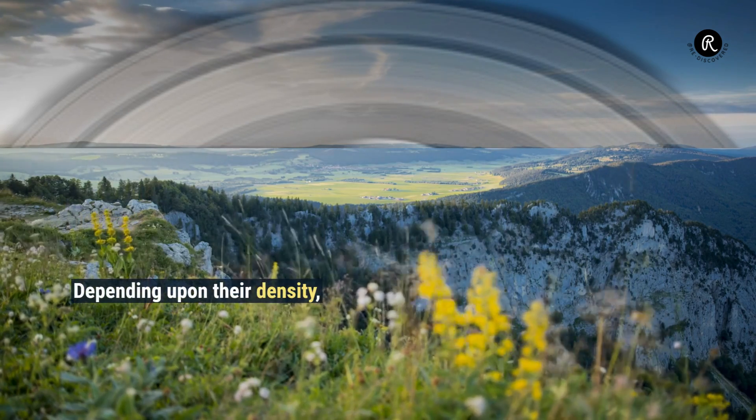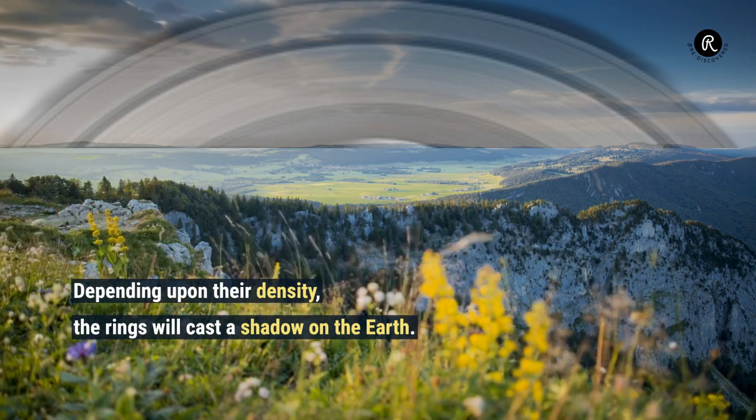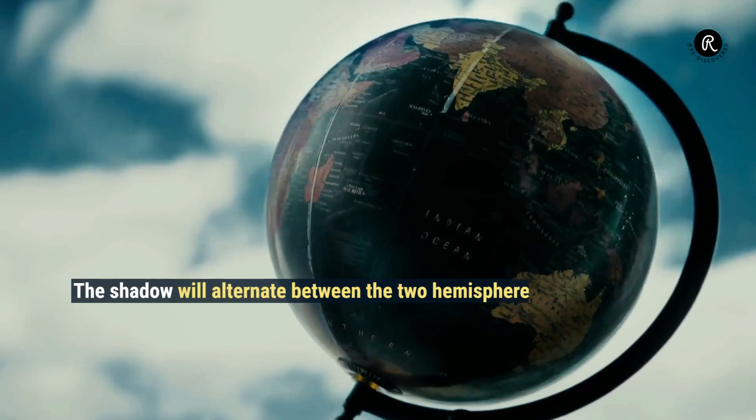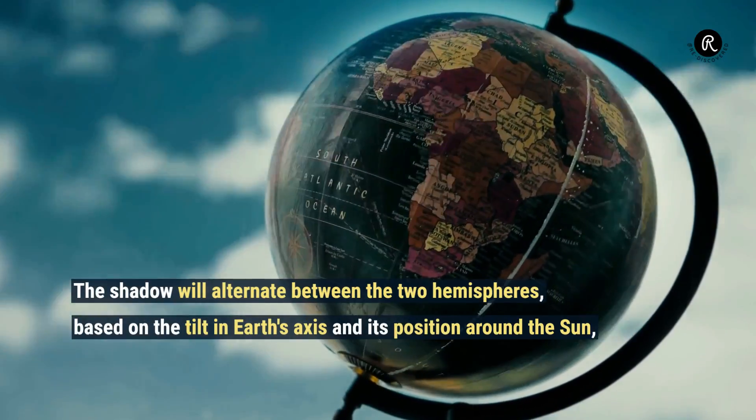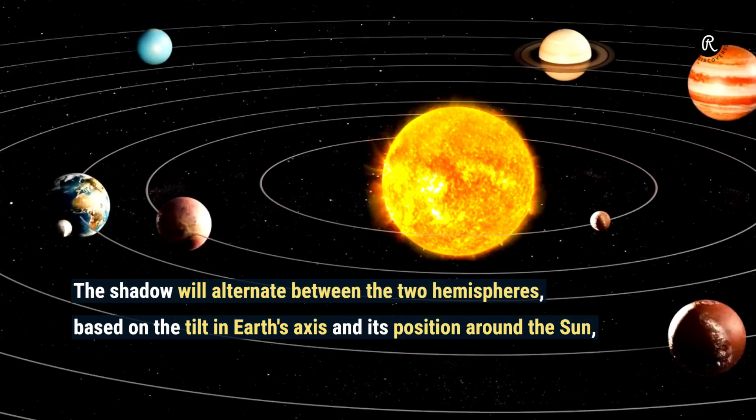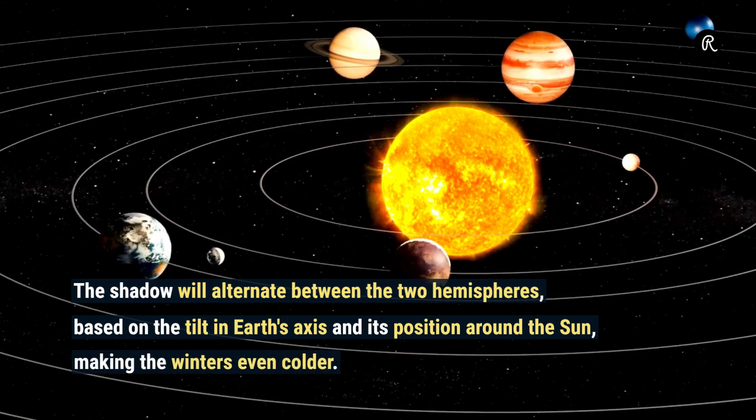Depending upon their density, the rings will cast a shadow on the Earth. The shadow will alternate between the two hemispheres based on the tilt in Earth's axis and its position around the Sun, making the winters even colder.